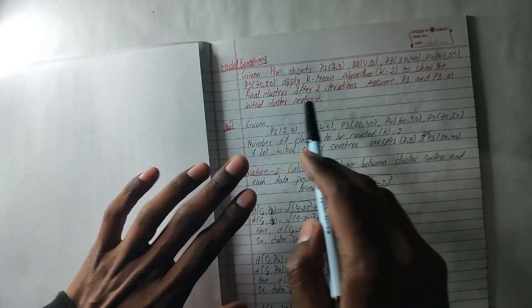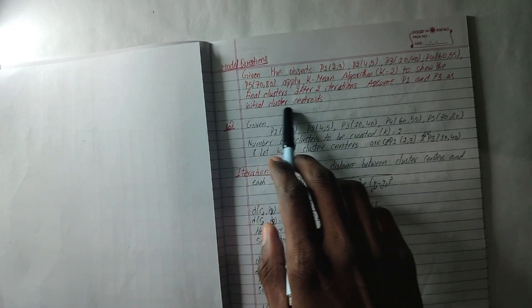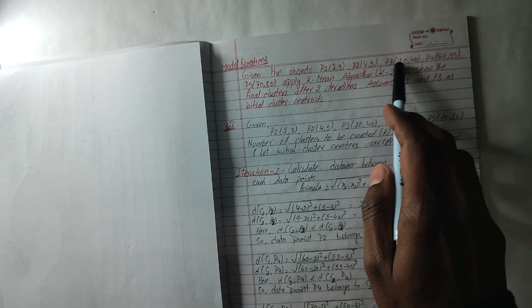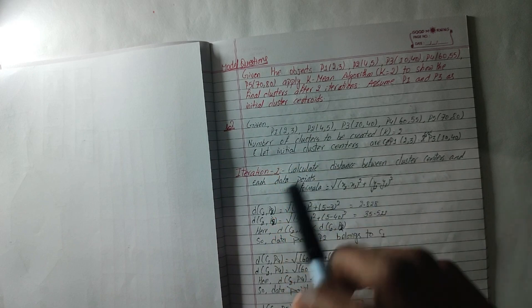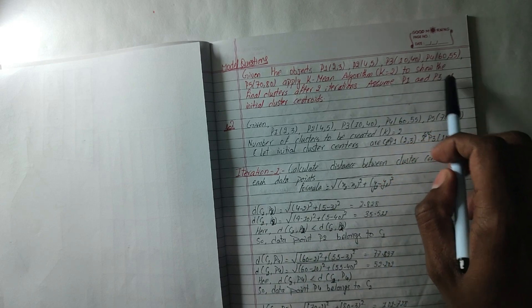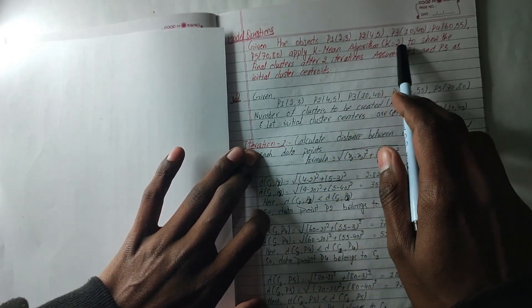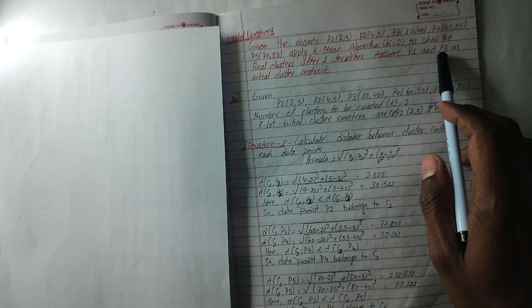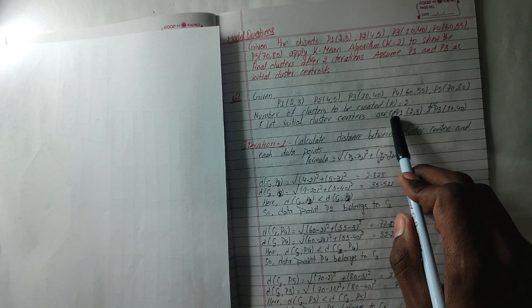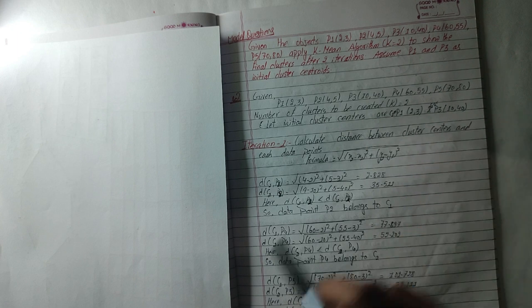You should start using P1 and P3 as initial clusters. P1 and P3 are the initial cluster centers. The number of clusters is K=2. C1 is initialized with P3 and C2 is the second cluster center.